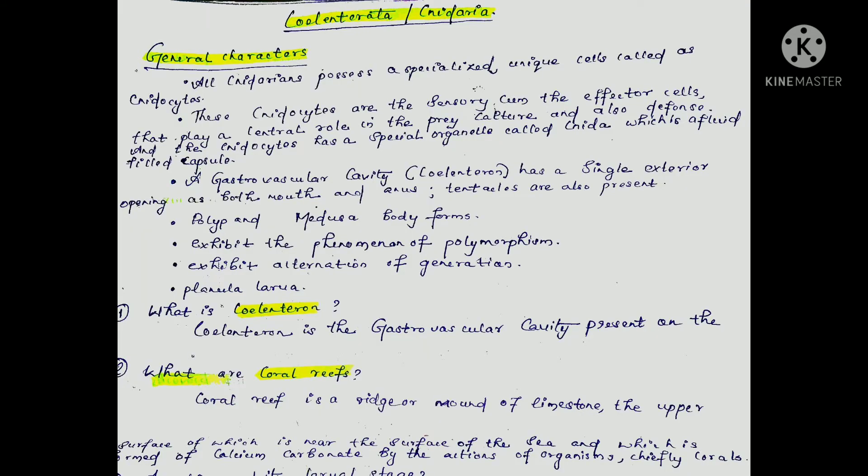All cnidarians possess specialized unique cells called cnidocytes. These cnidocytes are the sensory and effector cells that play a central role in prey capture and also defense. The cnidocytes have a special organelle called cnida, which is a fluid-filled capsule. Cnidocytes are the defining specialized cells of cnidarians.